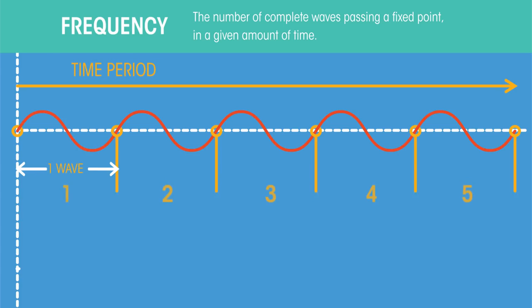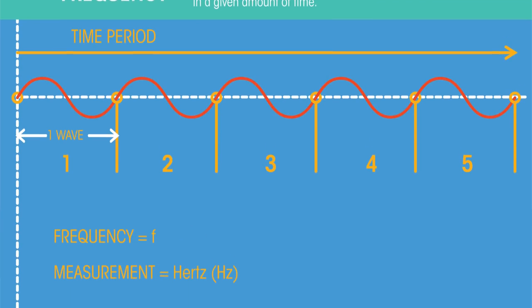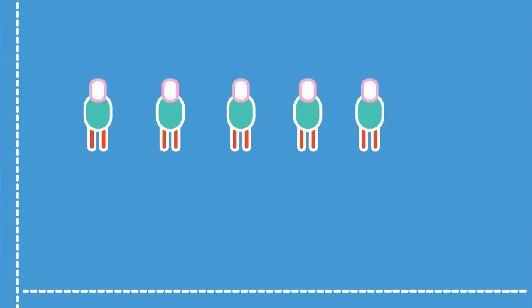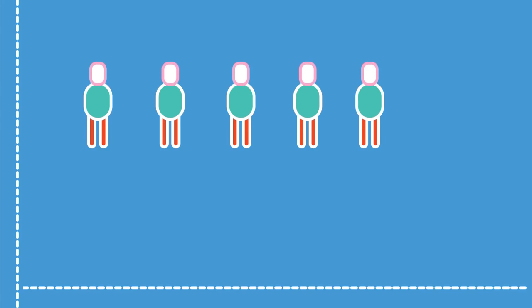So if this was our time period, the frequency would be five. Frequency is given the symbol F and is measured in units called Hertz. Hertz measure how many complete cycles per second, so how many people in our Mexican wave stand up every second.